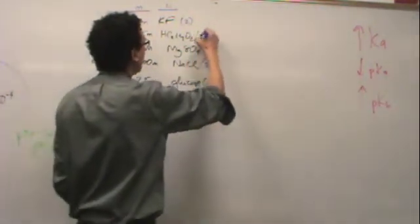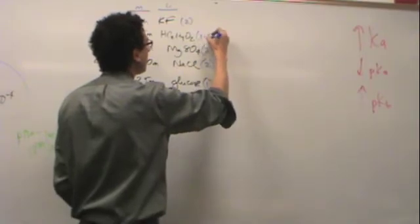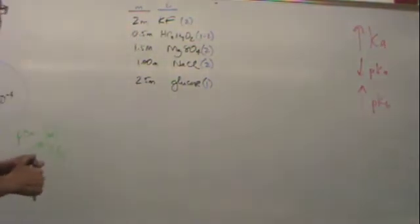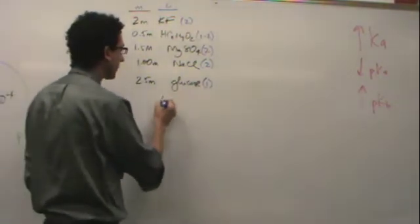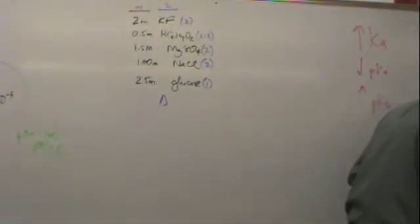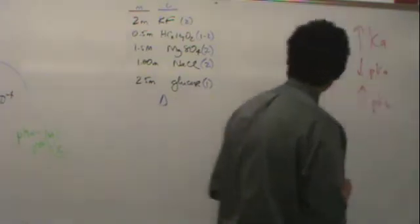This one is going to be between 1 and 2 somewhere because it's not a strong electrolyte, so it doesn't totally separate out into solution. So now we want to figure out which one has the lowest freezing point.